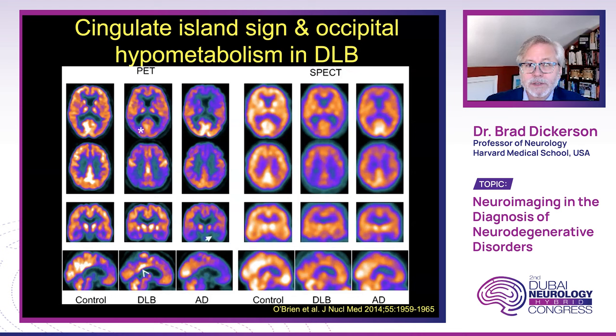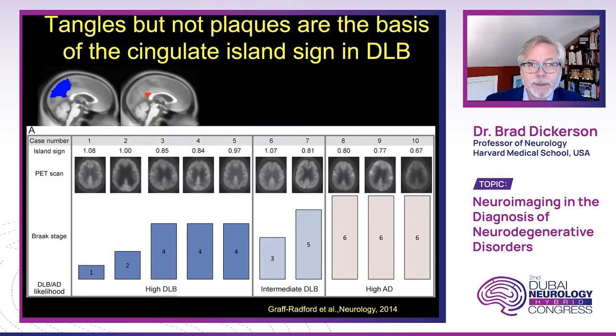In dementia with Lewy bodies, there's the cingulate island sign with occipital hypometabolism, visible on PET or SPECT. In Lewy body disease, you see preservation of the posterior cingulate cortex metabolism, whereas in Alzheimer's, this is an area of reduced metabolism. A study by Jonathan Graff-Radford from the Mayo Clinic showed that the presence of neurofibrillary tangles was the basis of the cingulate island sign, with lesser concomitant tangle pathology associated with a more prominent cingulate island sign.